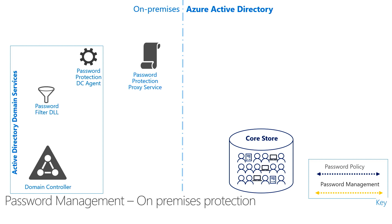Second, we have the DC Agent Service. This service is responsible for periodically calling the Azure AD Password Protection Proxy Service to retrieve new versions of the password policy from Azure AD. And then we have the DC Agent password filter DLL. This DLL receives password validation requests from the operating system and forwards them to the Azure AD Password Protection DC Agent Service that's running locally on the domain controller. The DC Agent of a domain controller locates an Azure AD Password Protection Proxy Service by querying the forest for proxy service connection point objects.